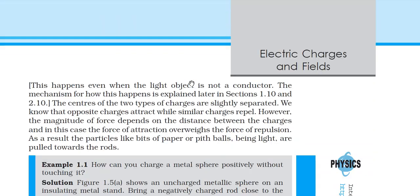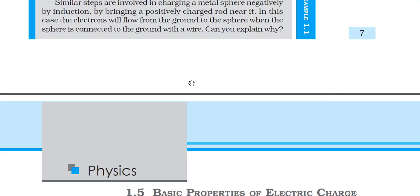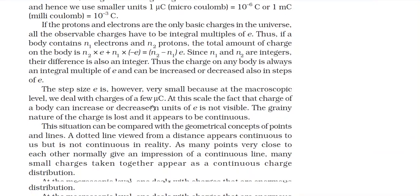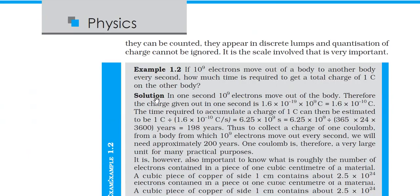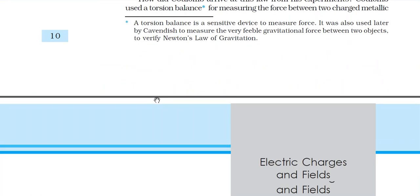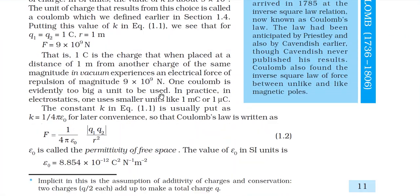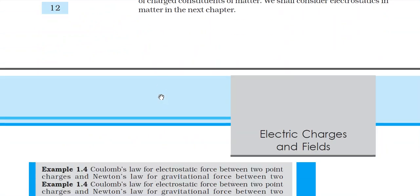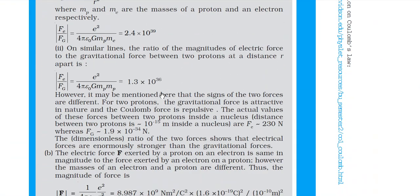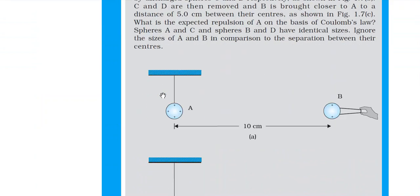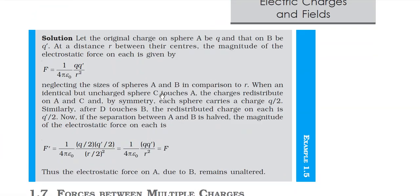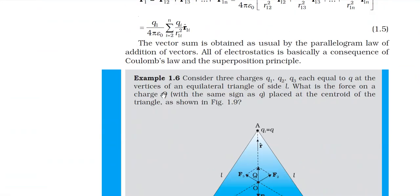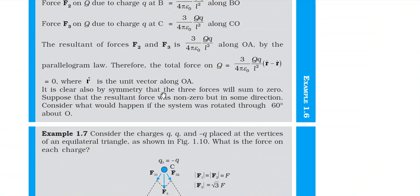We also covered the working of the gold leaf electroscope, unification of electricity and magnetism, and Coulomb's law, which deals with the force of interaction between two charged particles. Then we went through the application of Coulomb's law using the concept of vectors. We applied Coulomb's law for multiple charges — for a system of N charges, how we calculate the net force on any single charge due to the remaining N-1 charges.